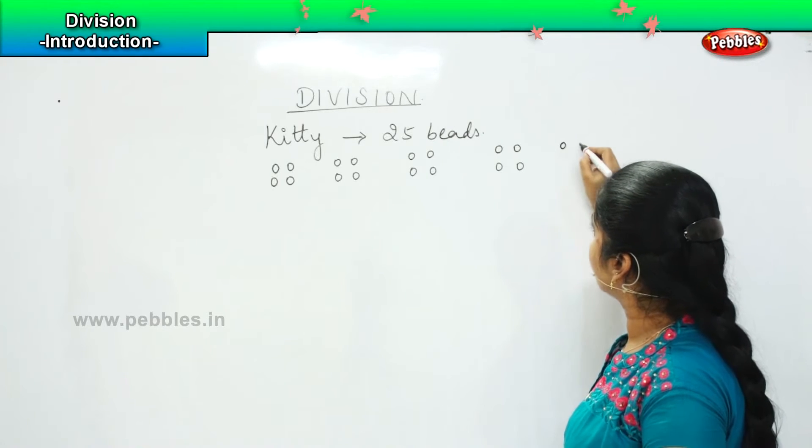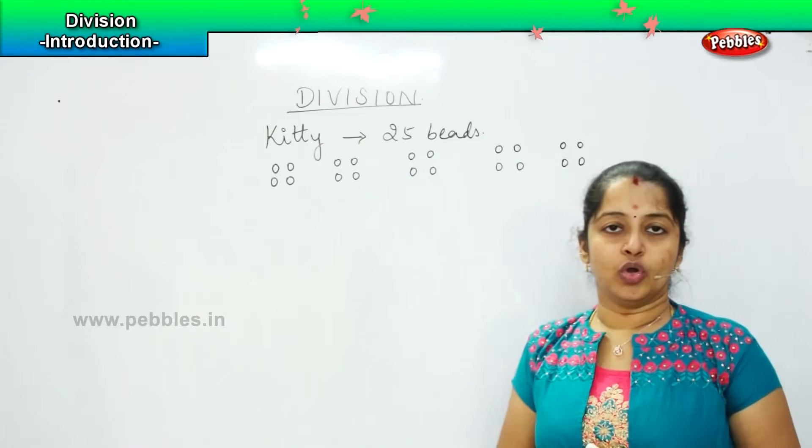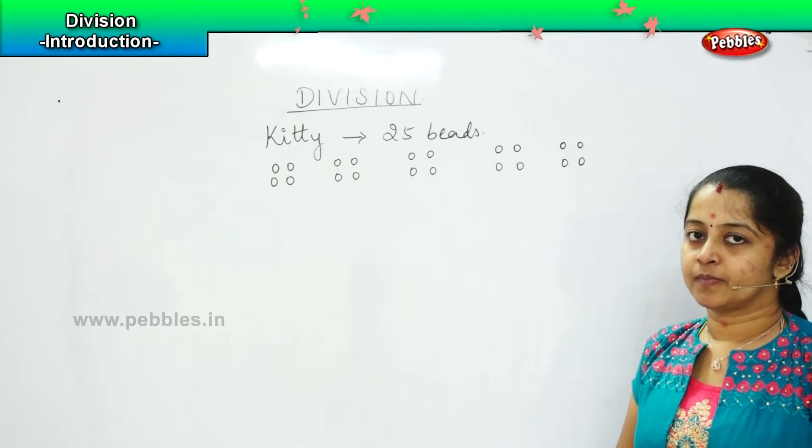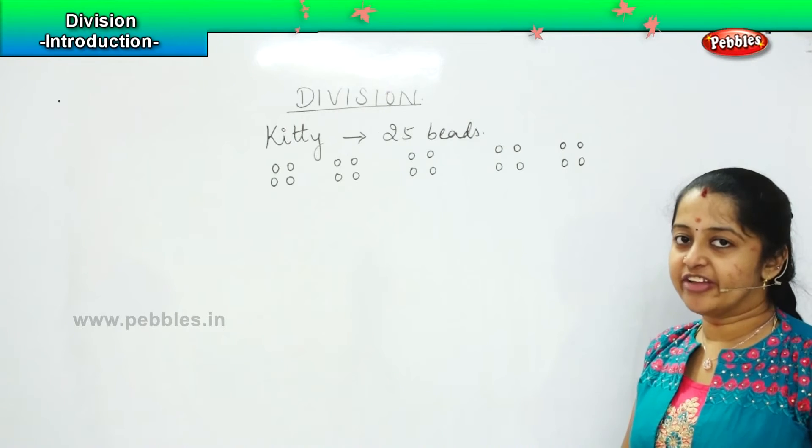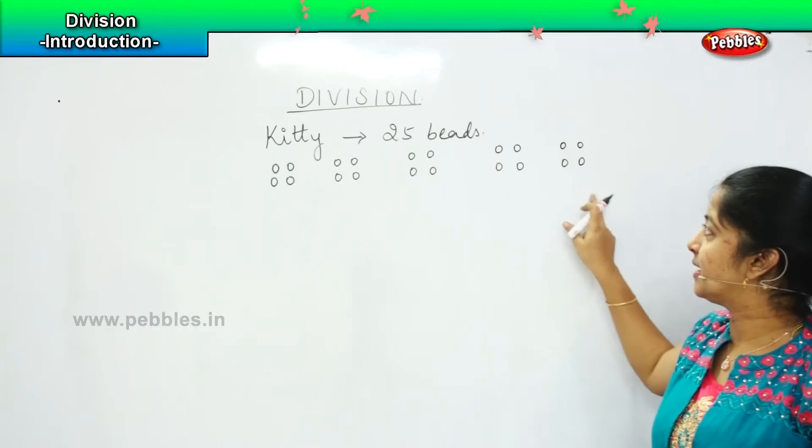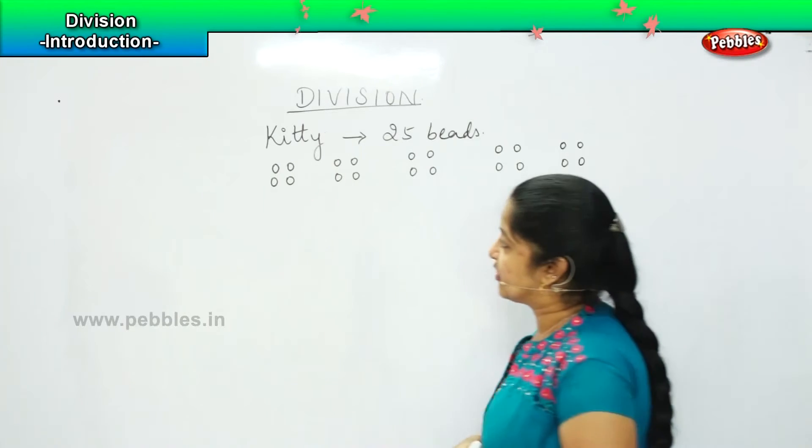So what will she do? Again, she will divide 1, 2, 3, 4. So now there are 20 beads. So how many is left with her? Very good. She is having 5 more beads.